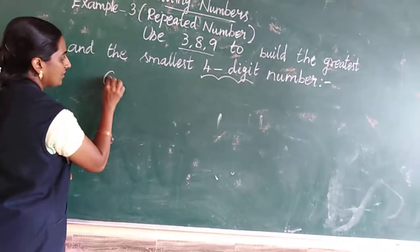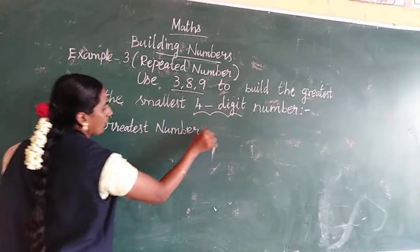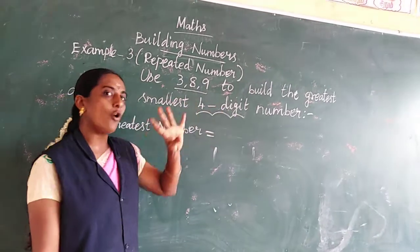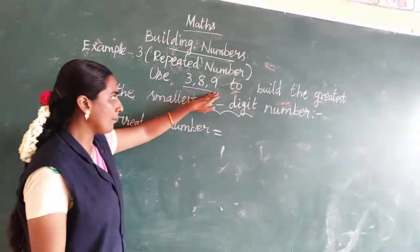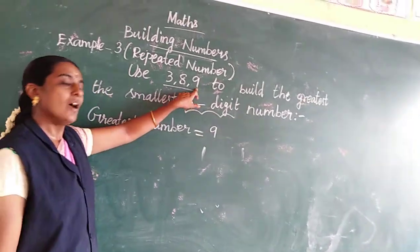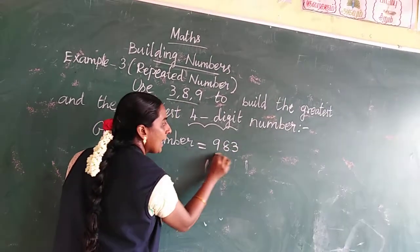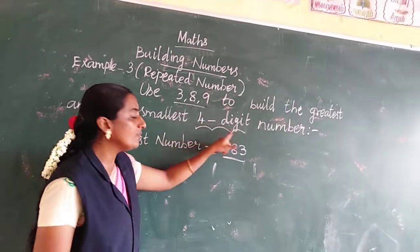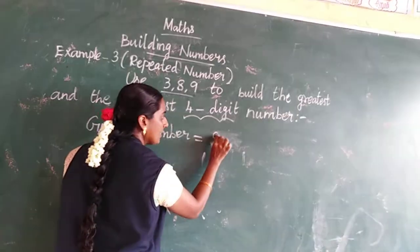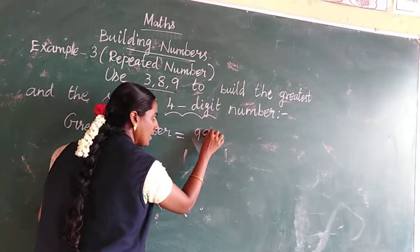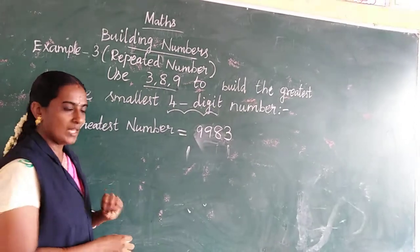For the greatest number, big to small: the biggest number is 9. Since we need 4 digits but only have 3, we repeat the biggest number. So we write 9 again, then 8, then 3. The greatest 4-digit number is 9983.